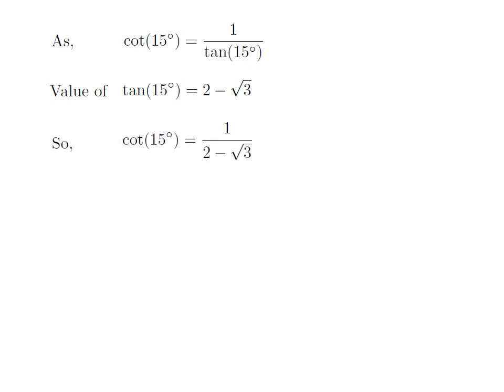Replacing the value of tangent of 15 degrees in the above expression of cotangent of 15 degrees, we get cotangent of 15 degrees is equal to 1 upon 2 minus square root of 3.